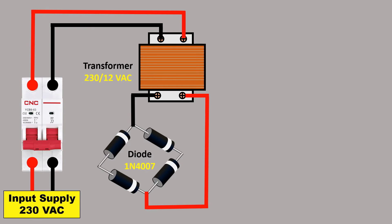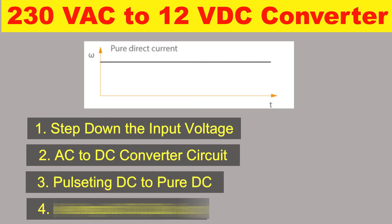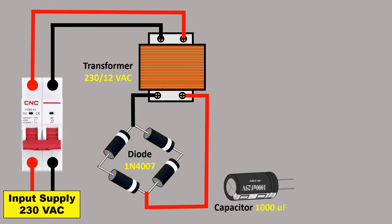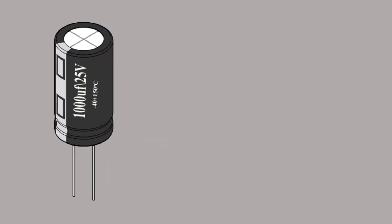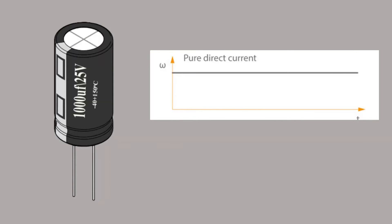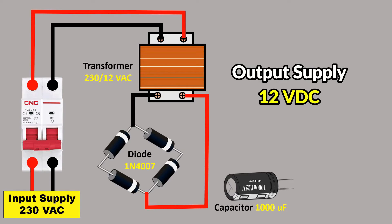The diode provides you an output power supply which is of pulsating type. If you want to convert pulsating DC into pure DC, you need to use a capacitor of 1000 microfarad. The capacitor will convert pulsating DC into pure DC, but the output voltage will always fluctuate.